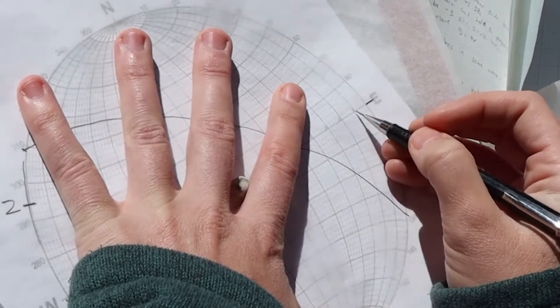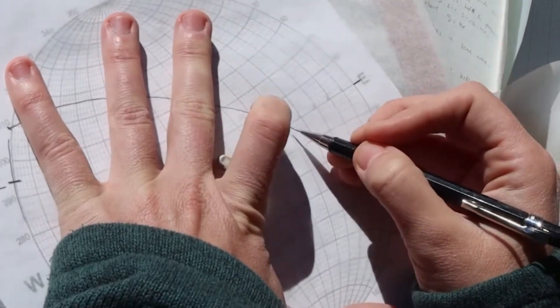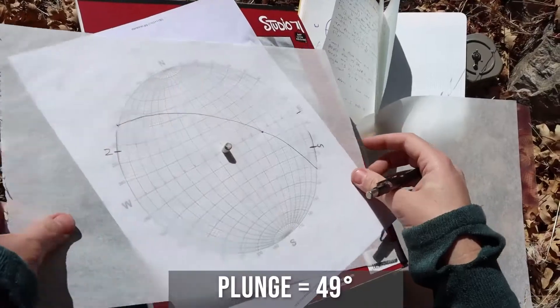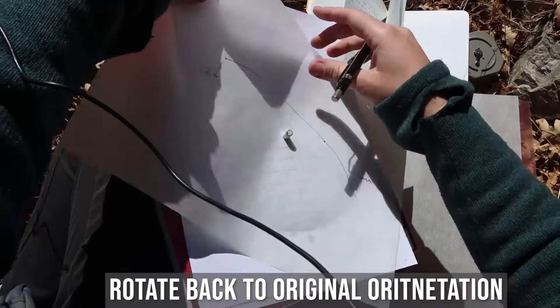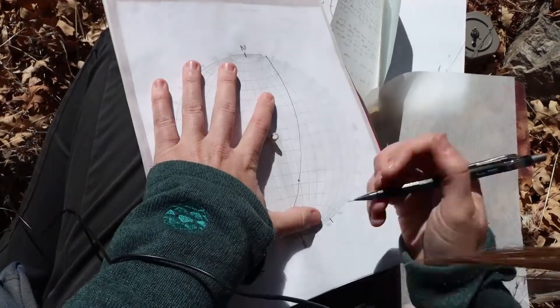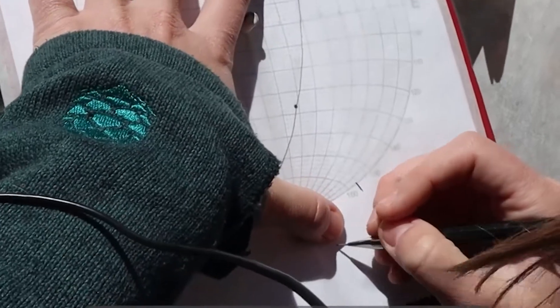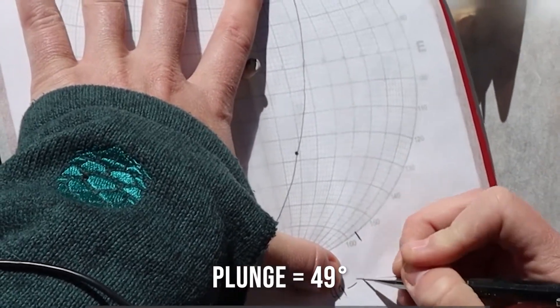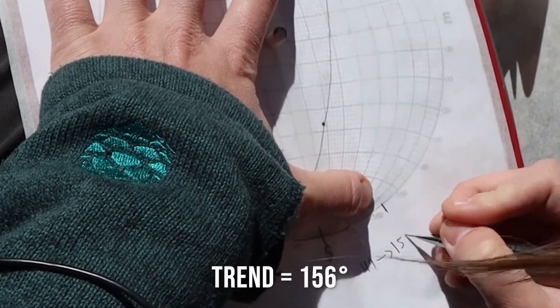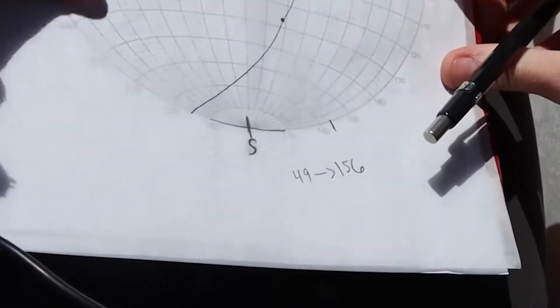I can mark this is my trend. Here is 10, 20, 30, 40, 49 looks to be my plunge. So that trend and plunge is oriented at 49 towards 0 or 156, and that is my trend and plunge.